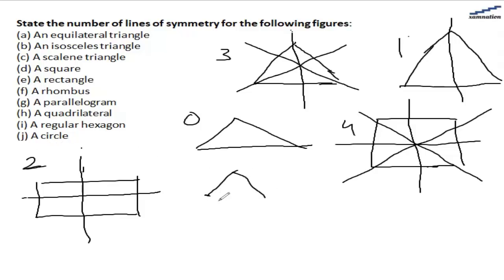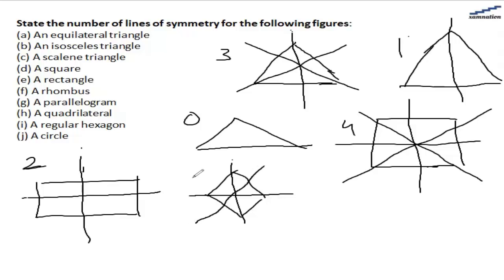For a rhombus, all sides are equal. So we have one, we have two. And since all sides are equal, we can have a third line of symmetry also, and also a fourth line of symmetry. So, there are four lines of symmetry.